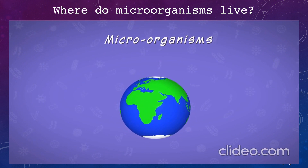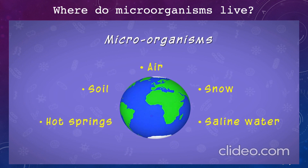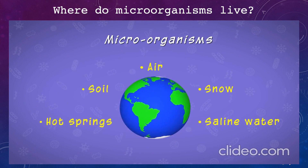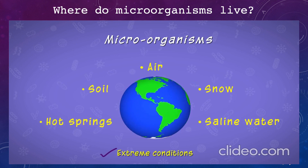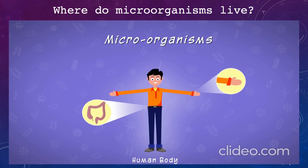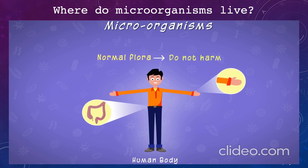Micro-organisms are present everywhere — in air, soil, snow, hot springs, saline water, and in extreme conditions like extreme hot and extreme cold. If living in such extreme conditions is possible for them, then what about the most comfortable condition on and inside the human body? Yes, microbes are found on the surface of our body as well as inside the body. But need not worry — the microbes inside the body are called the normal flora of our body. They are also known as good microbes; they do not harm us.